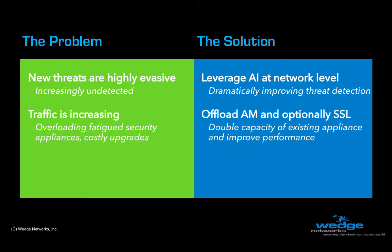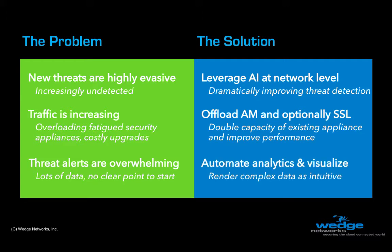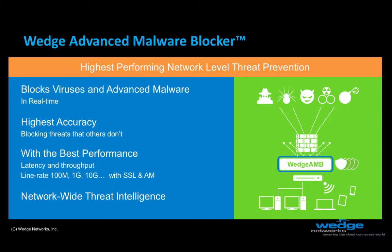And finally, enterprise security teams routinely complain about the overwhelming amount of threat data and the lack of threat intelligence to aid in determining which are the most critical threats. Wedge AMB solves this by automating the compilation, analysis, and visualization of network-wide threat data for intuitive and actionable information. So let's take a closer look at exactly what makes Wedge Advanced Malware Blocker so compelling.